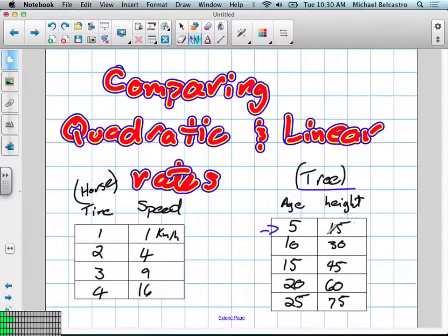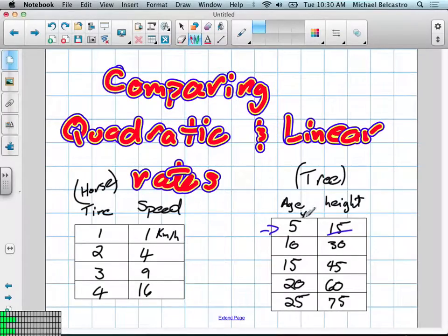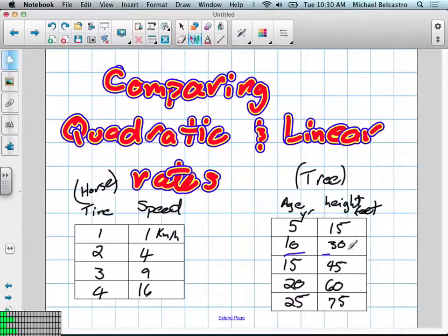Another rate of change we have is the height of a tree and its age. So at five years, 15 feet. At 10 years, it's at 30 feet. 15 years, 45 feet. 20 years, 60. And 25 is 75. A couple things we need to go over before we actually solve whether these are quadratic or linear relations.